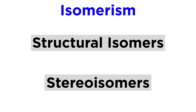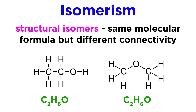The two main types we will look at are structural isomers and stereoisomers. Structural isomers are molecules with the same molecular formula but different connectivity, so the same number and types of atoms just connected differently.